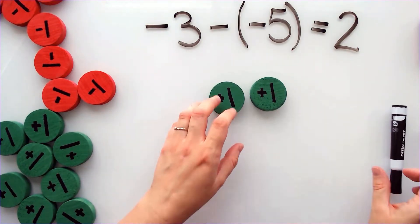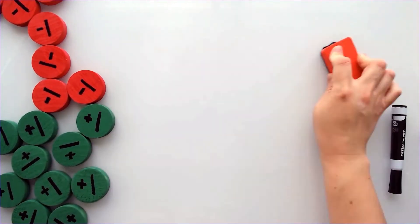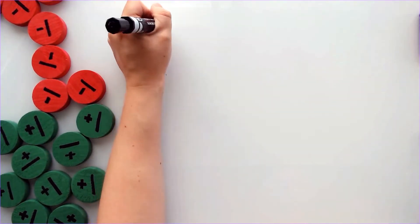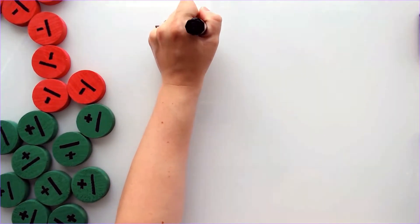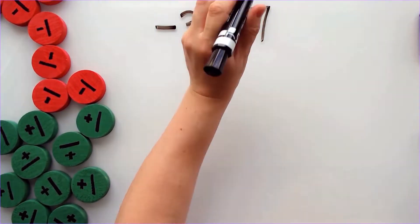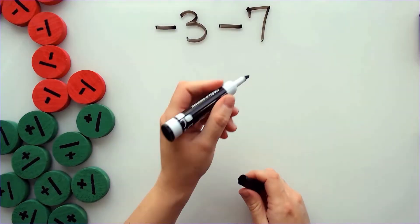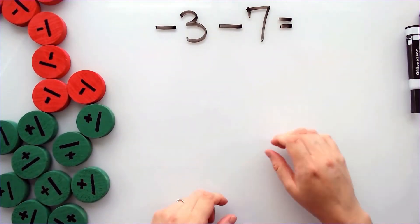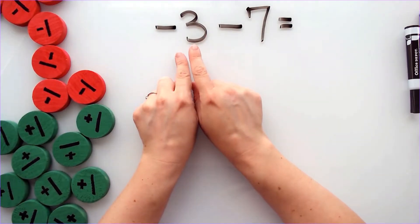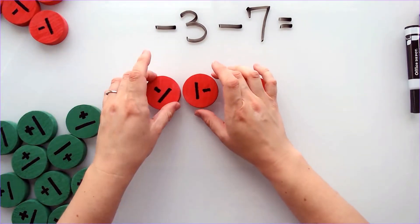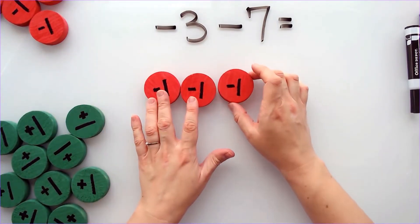All right, let's look at another problem. Let's say I had the problem negative 3 minus 7. And we need to find out what that equals. Again, I'm going to start with my first integer. My first integer is negative 3. That means I need 3 negative counters.